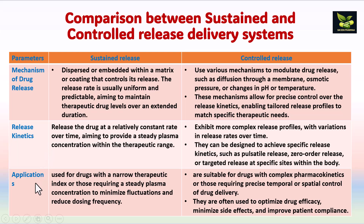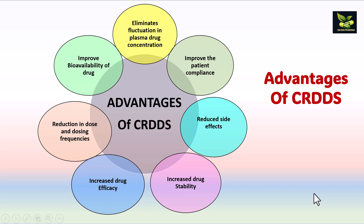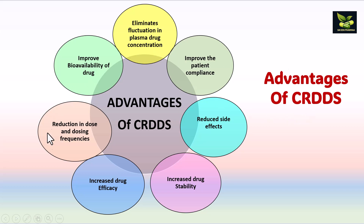For sustained release, drugs with a narrow therapeutic index can be used, but generally drugs with a broader therapeutic index are preferred. These systems optimize drug efficacy, minimize side effects, and improve patient compliance. Key advantages include: improved patient compliance due to reduced dosing frequency, reduced dose and side effects, increased drug stability by avoiding metabolism, increased drug efficacy by controlling rate and amount, reduction in dose and dosing frequency, improved drug viability, and elimination of fluctuation in plasma drug concentration.